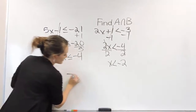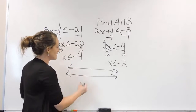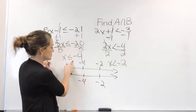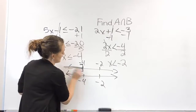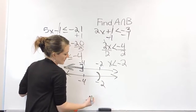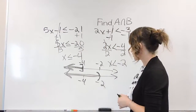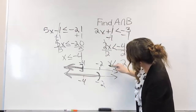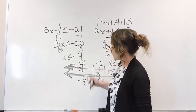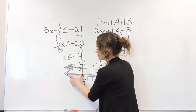Now graph both to see if they share anything. We're talking about negative 4 and negative 2. For the first, x is less than or equal to negative 4 — a bracket on negative 4 and shading to the left. For the second, x is less than negative 2 — a parenthesis on negative 2 and shading everything to the left. Looking for where these graphs both exist: moving along the number line — the bottom one exists here but not the top, until we get to this point where they both exist. Our solution set is that space where they both exist.